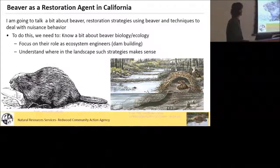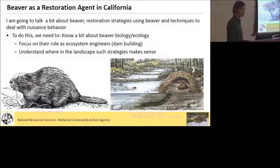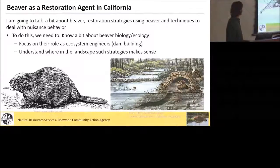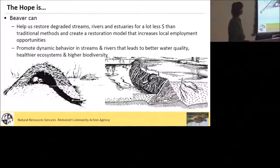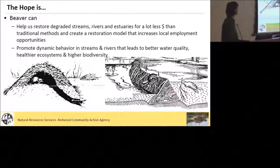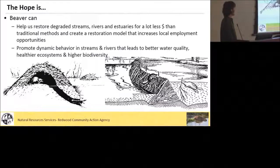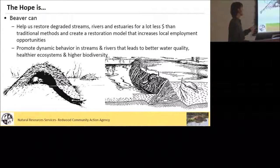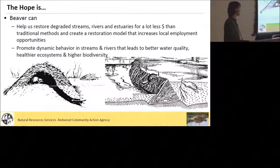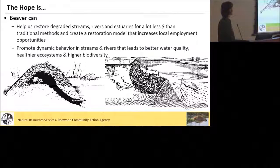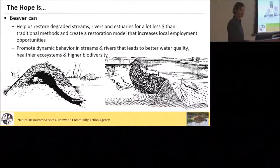I'm specifically going to focus on their role as ecosystem engineers, because it's really their dam building that in terms of river restoration we're most interested in, and then talk briefly about where in the landscape these strategies make sense — they don't make sense everywhere. The hope here is that beaver can help us restore degraded streams, rivers, and estuaries for a lot less money than traditional methods. We're putting the beaver to work, and also creating a restoration model that increases local employment opportunities by getting people out into the stream helping to build beaver dam analogs — essentially structures that mimic the form and function of beaver dams — that will promote much more dynamic behavior in streams leading to better water quality, healthier ecosystems, and higher biodiversity.